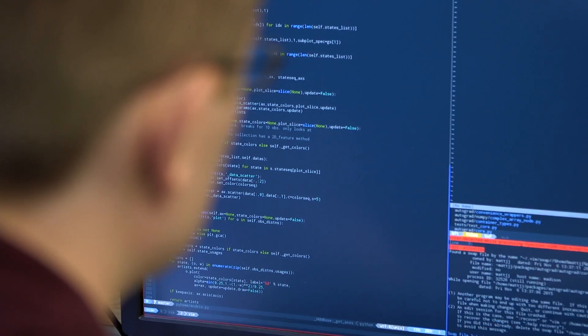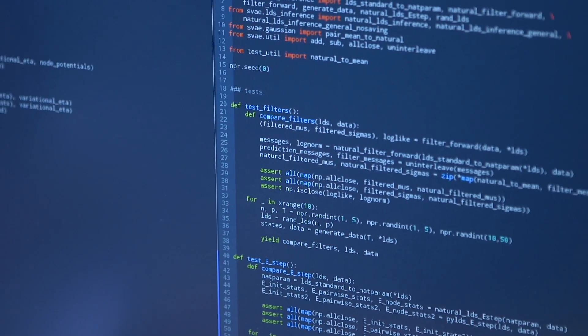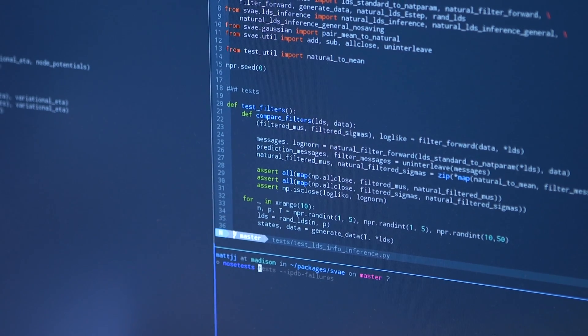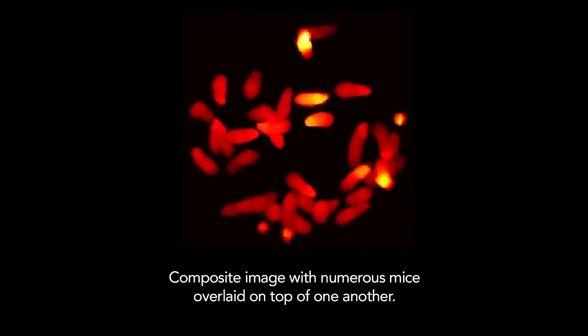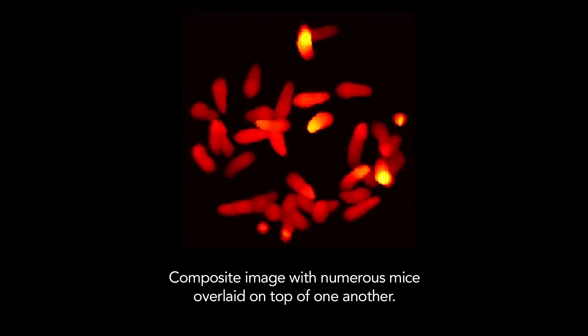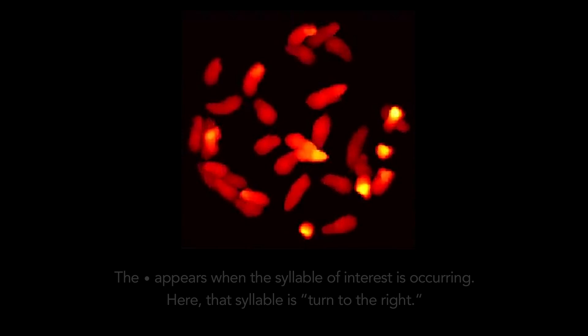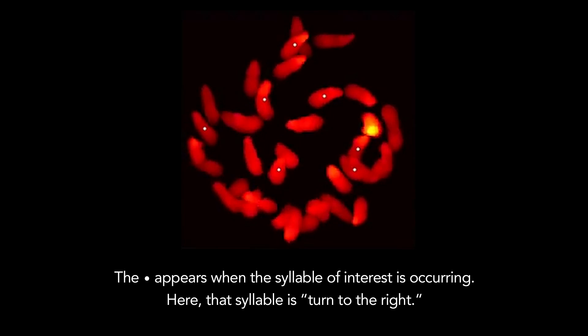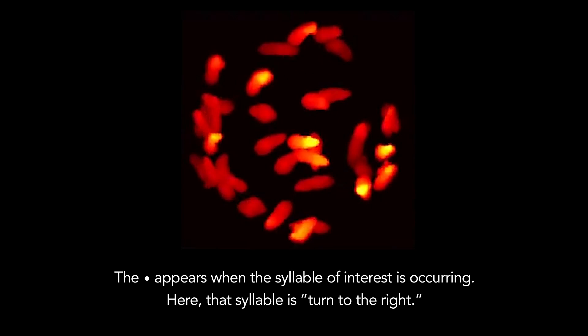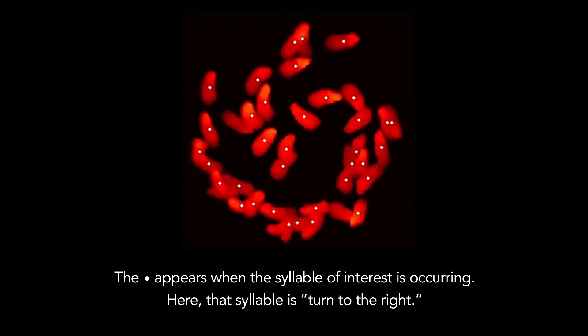I developed the mathematical models that define what the syllables are and tell the computer how to find them in the data. We sort of take all those video frames and put them on top of each other so we can watch all the videos at once. It looks like they're doing very different things, then all of a sudden they'll snap together and perform some specific kind of motion that's very stereotyped.